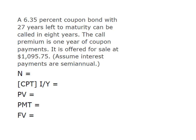We have a 6.35% coupon bond with 27 years left to maturity, but it can be called in eight years. The call premium is one year of coupon payments, and it's currently offered for sale at $1,095.75, which tells us it's selling at a premium. So we need to get our values for our calculator.